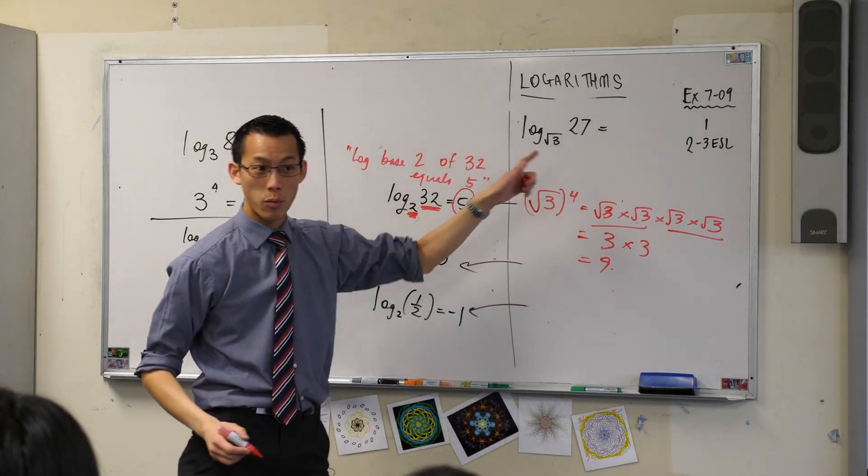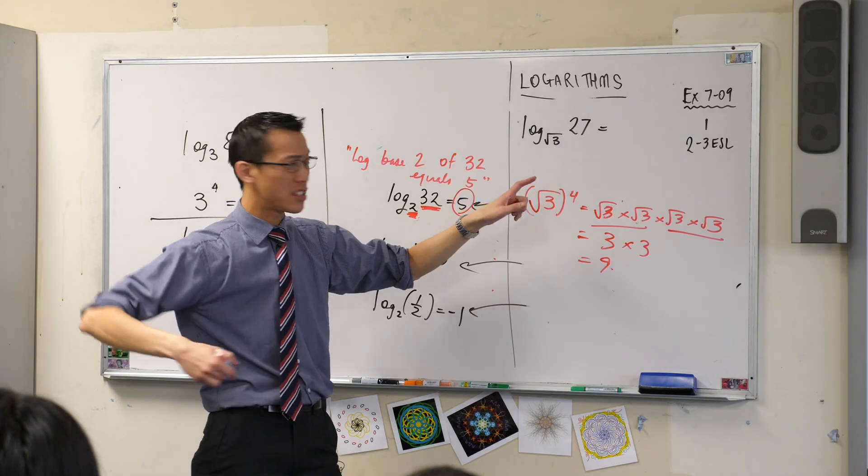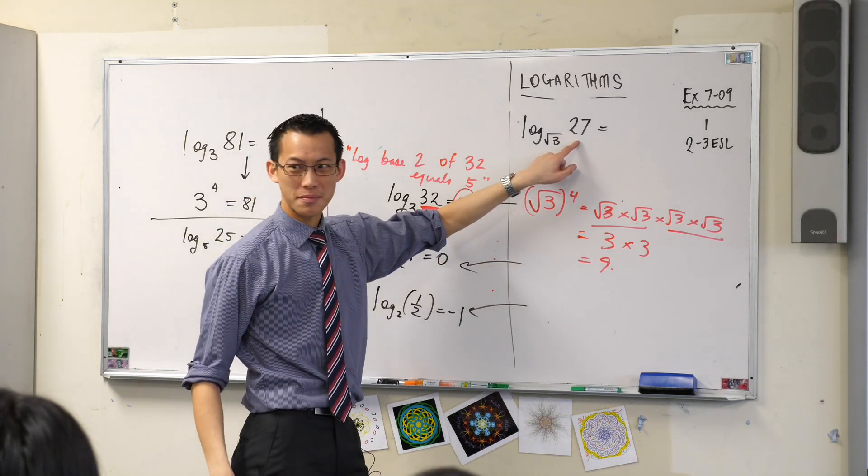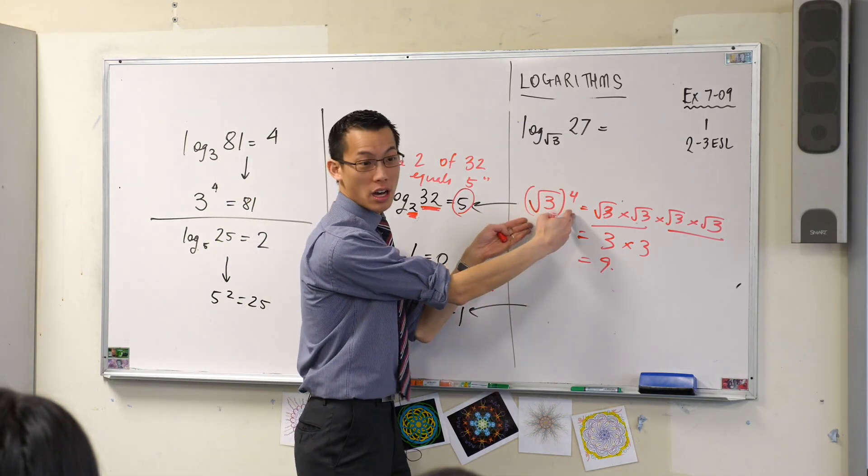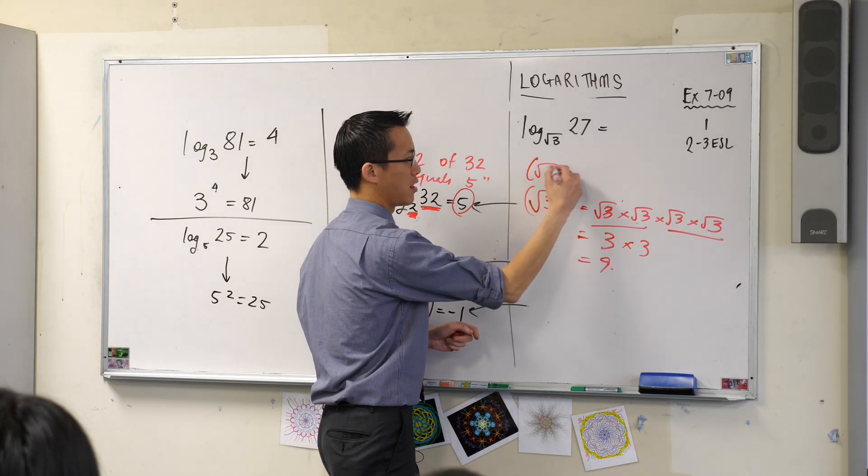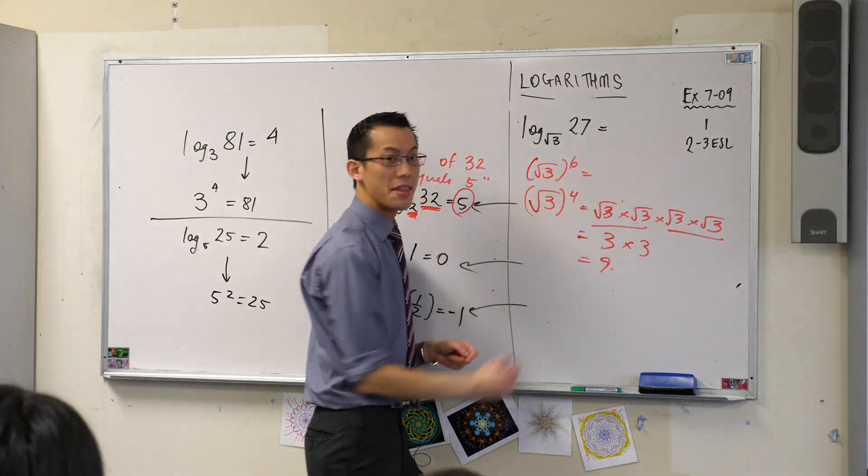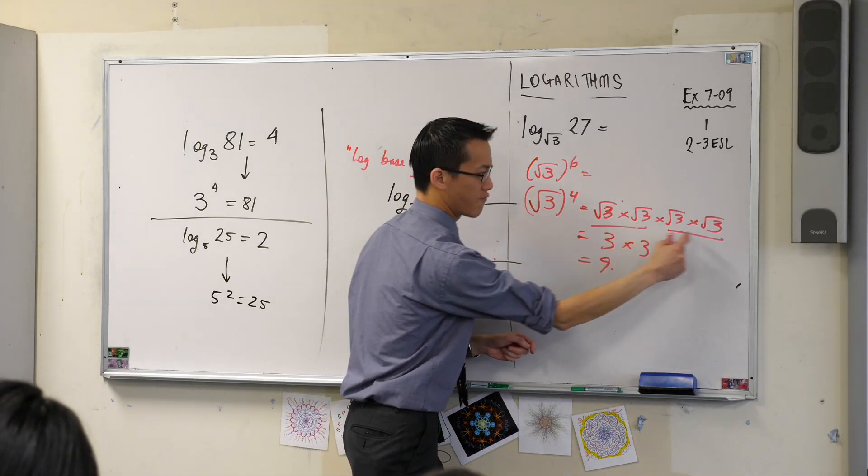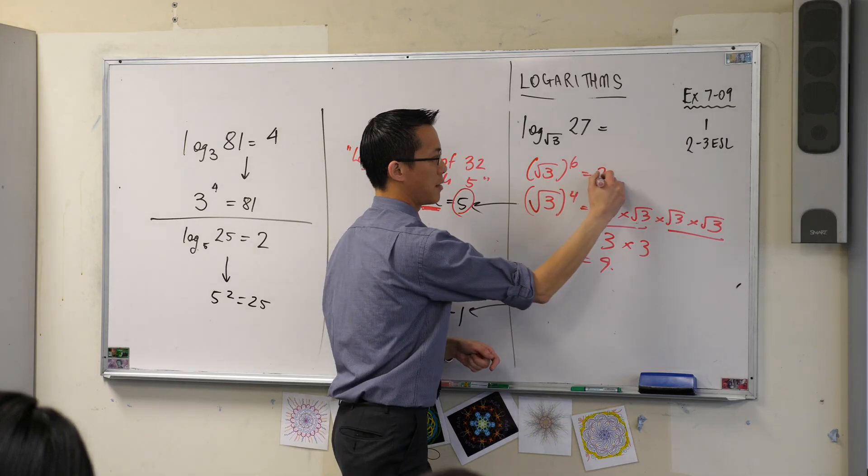That's close to what we want. How many more times do I have to do it to get to there? Instead of doing it 4 times, I should do it 6 times, shouldn't I? That's going to be 6 times, that's going to be 27.